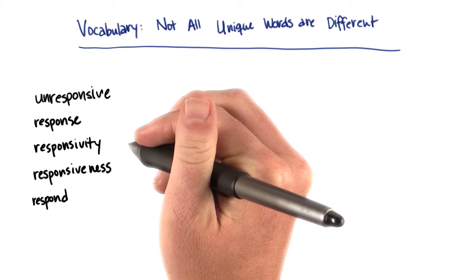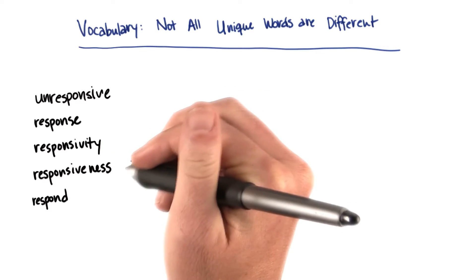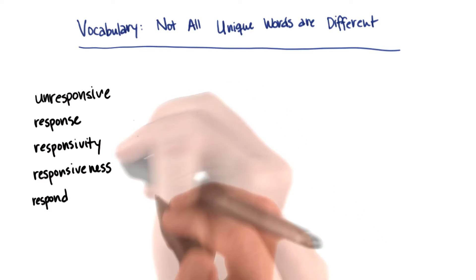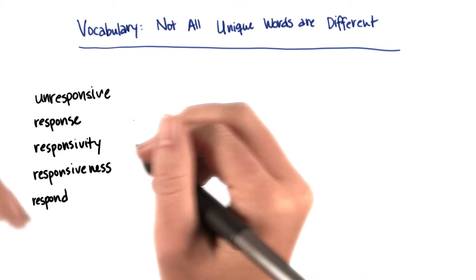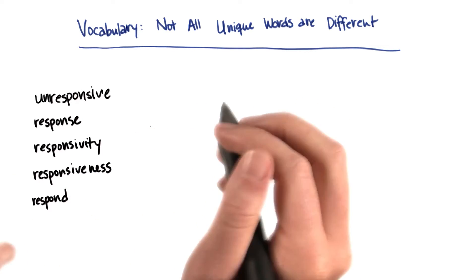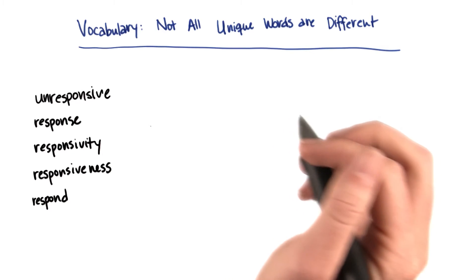they're all going to show up as different features, even though they're all getting at roughly the same idea. And this is going to be true for many words in a lot of languages, that they have lots of different permutations that mean only slightly different things.